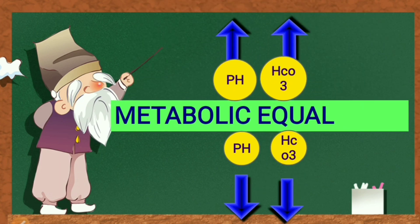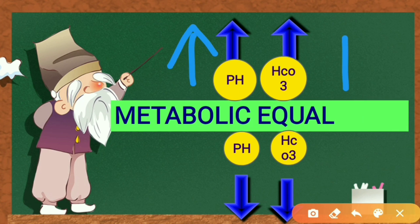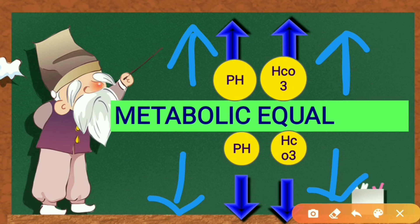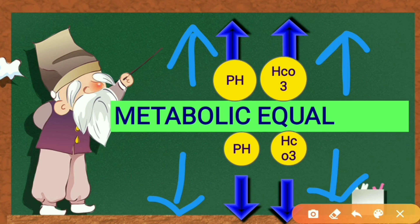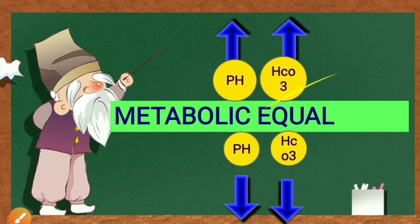For metabolic equal: pH on the higher side and bicarbonate is also on the higher side; pH on the lower side and bicarbonate is also on the lower side — they move in the same direction. When bicarbonate is abnormal and moves in the same direction as pH, it is said to be metabolic equal. This is the simple second step of ABG interpretation.